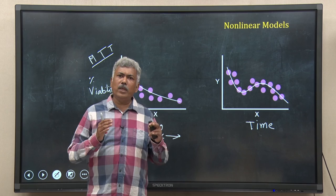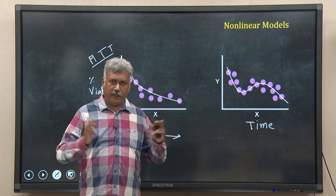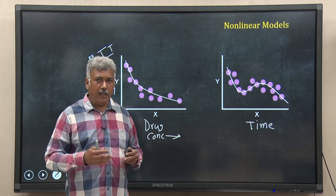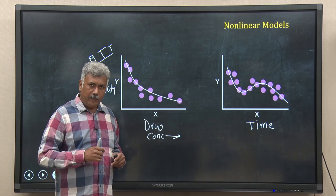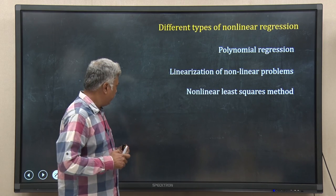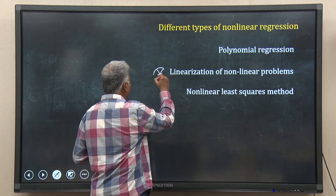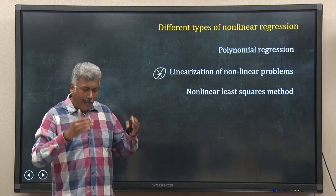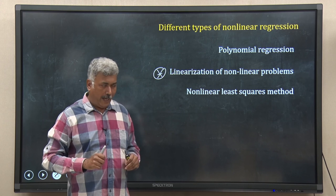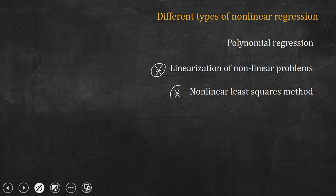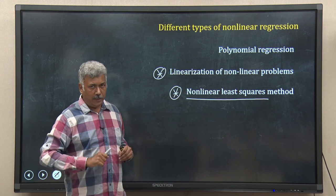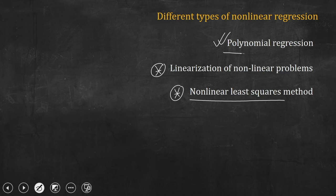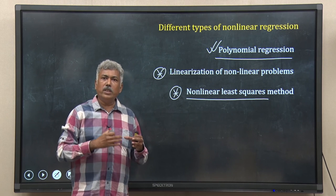For a linear system, we have simple linear regression — one single method you can use universally. But for a non-linear system, that is not true. There are a large number of algorithms or methods to fit a non-linear model to your experimental data. I will discuss only three of them. One method is to linearize your non-linear problem — you convert the non-linear equation into a linear equation and then use linear regression. Another method is called non-linear least squares. And I will discuss in most detail a method called polynomial regression, which I will start with.